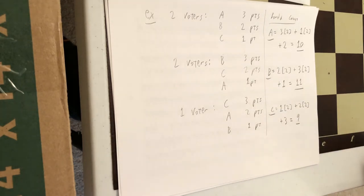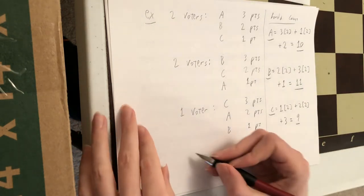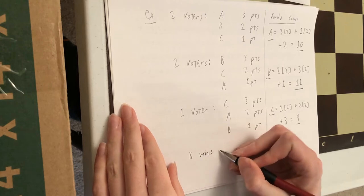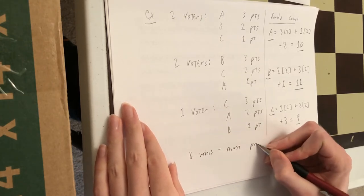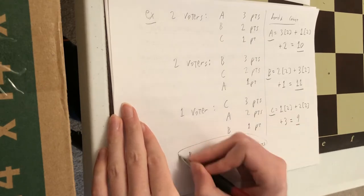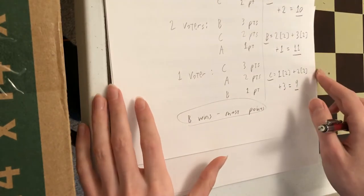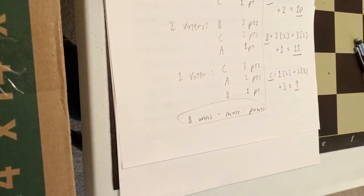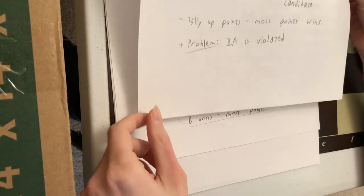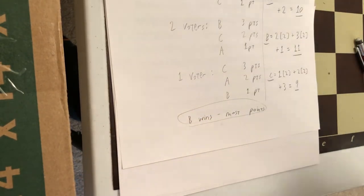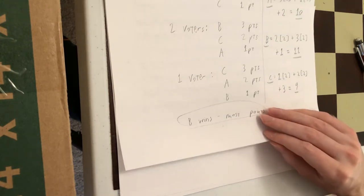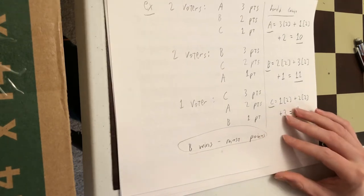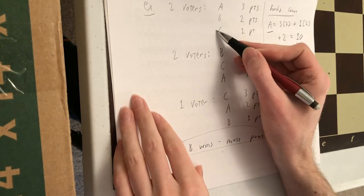So B wins because B has a higher Borda count, 11, than A or C. So that's the outcome of the Borda count. Now to show how this violates independence of irrelevant alternatives. So imagine what would happen here if C were to drop out. So it's just A and B now.